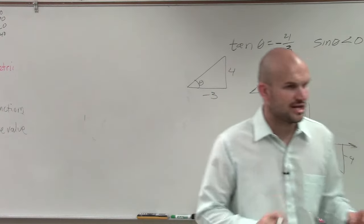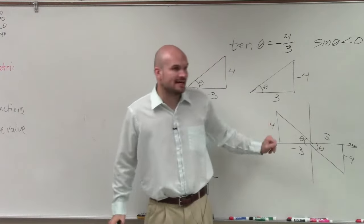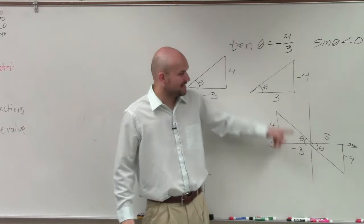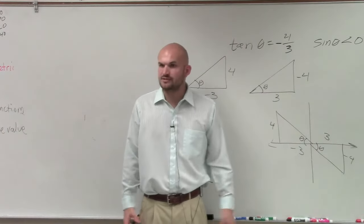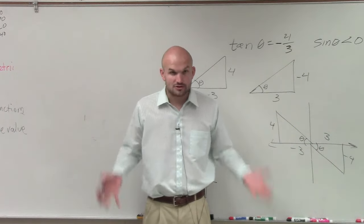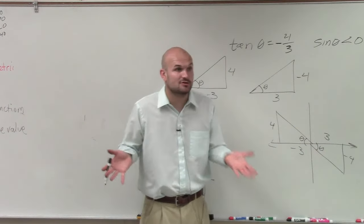OK, that's never going to change. But those are my two possible prints. Both of these triangles produce a tangent of theta, which is negative 4 over 3. Does everybody agree? OK, so therefore I'd have to do this problem twice to provide both answers.